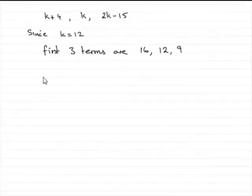Now in this part of the question, we know that k is 12, and so by substituting k equals 12 into the first three terms, you can get that the first three terms now are 16, 12 and 9.